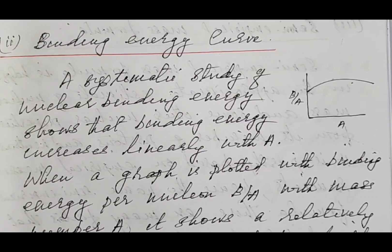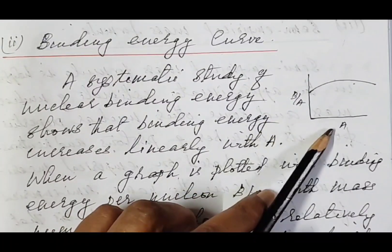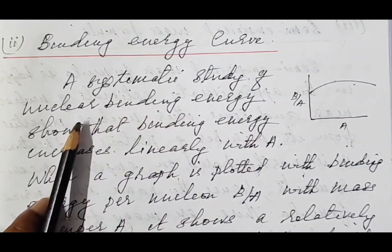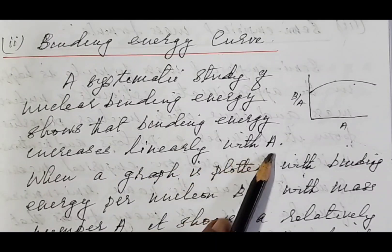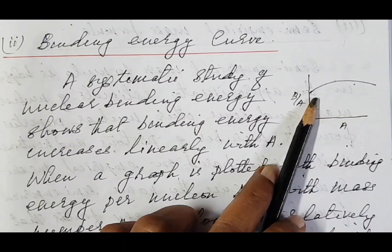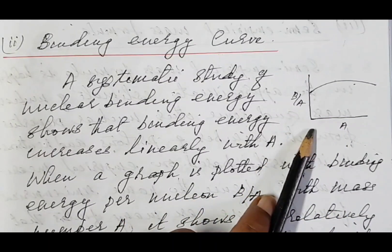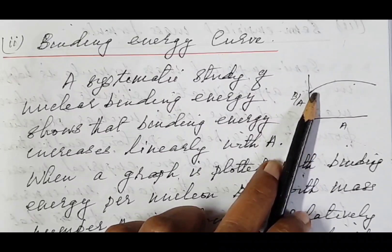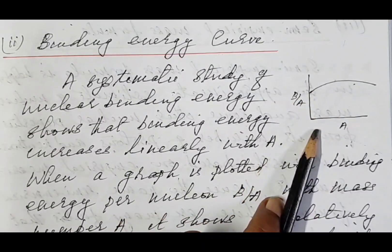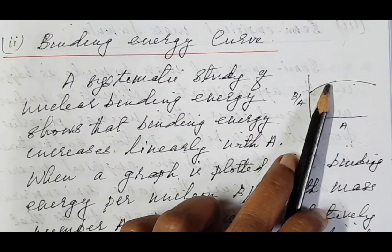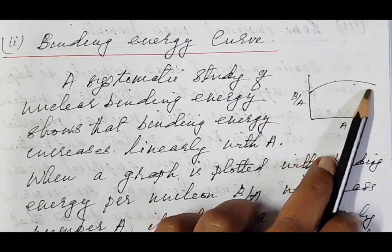The binding energy curve is a graph plotted with binding energy per nucleon (B/A) along the y-axis and mass number A along the x-axis. A systematic study shows that binding energy increases linearly with A. From the graph, for light nuclei, binding energy per nucleon increases with A. Around A equal to 60, it remains approximately constant, and beyond A equal to 200, it slightly decreases.